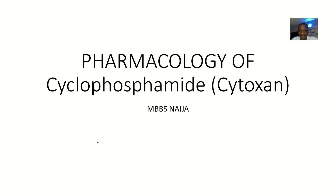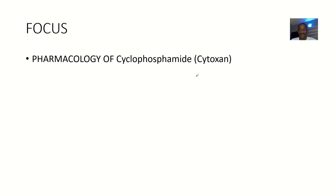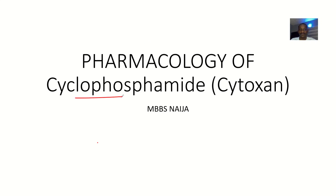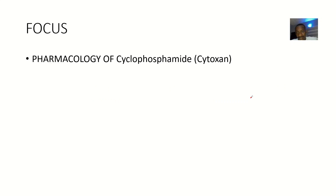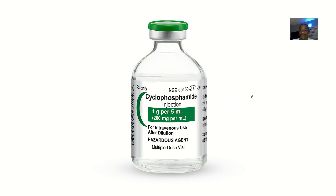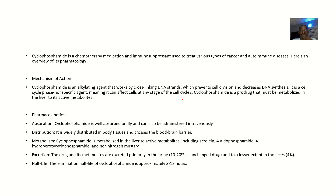Next drug we're talking about is the pharmacology of cyclophosphamide. This drug is mostly sold under the brand name Cytoxan. It is a chemotherapy medication and an immunosuppressant — it can suppress your immune system. It is used in treating various types of cancers and autoimmune diseases.